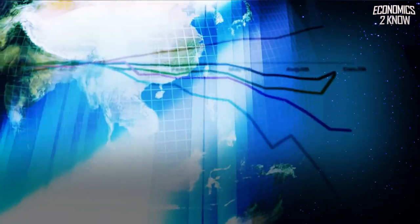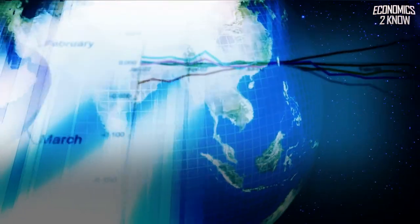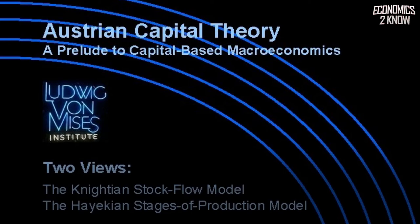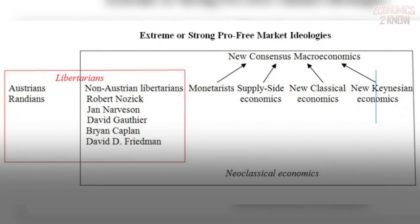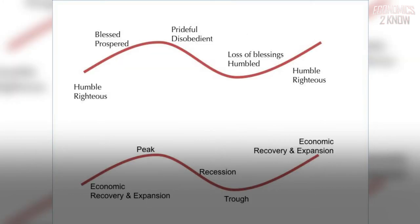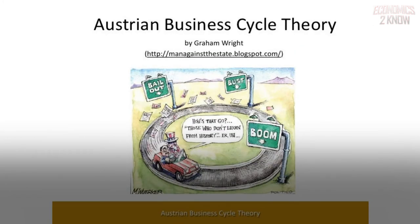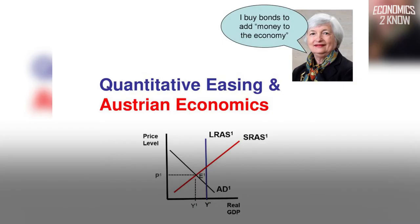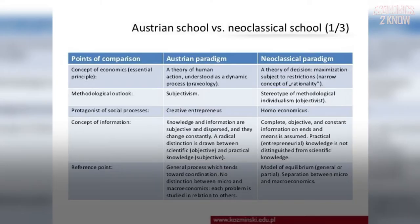The Austrian school is an older economic school that is gaining appeal. Like classical economists, Austrian economists never strictly separated micro and macroeconomics. Austrian theories have substantial consequences for what are otherwise considered macroeconomic concerns. The Austrian business cycle theory discusses the function of money and banking in linking microeconomic marketplaces together and across time.